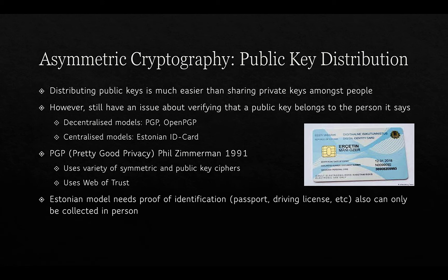An example of the centralized model is Estonia, which has an ID smart card containing your public and private keys, and maintains a register of everybody's public keys. The Estonian model requires proof of ID such as passports or driving licences, and can only be collected in person. Estonia also operates a digital citizenship process where anyone worldwide can apply, but the card must be picked up from a consulate — such as the one in Canberra — or satellite sub-consulates.